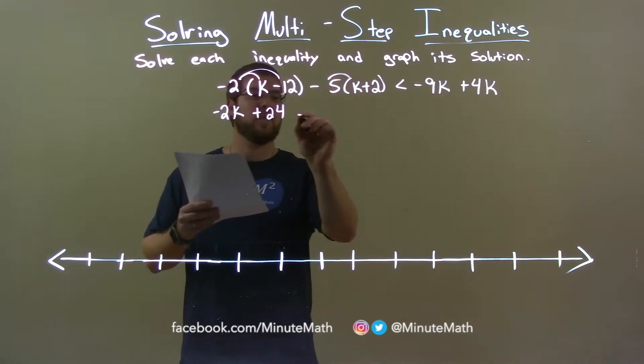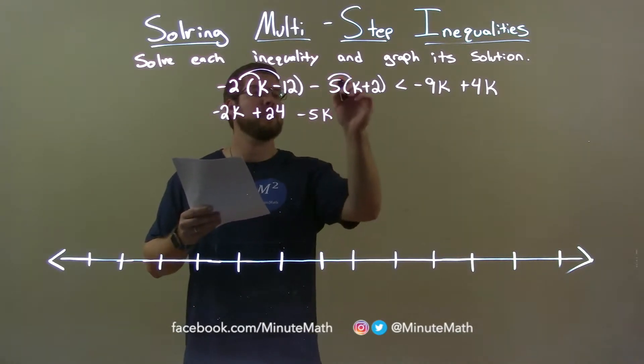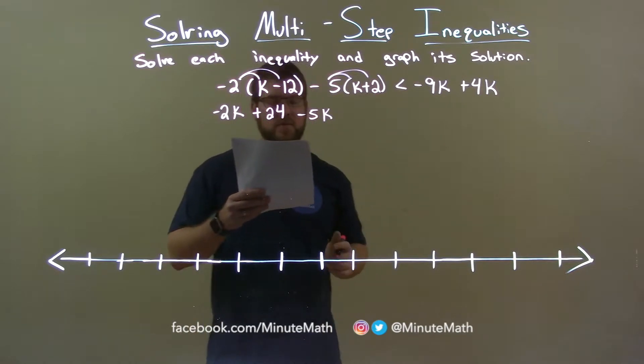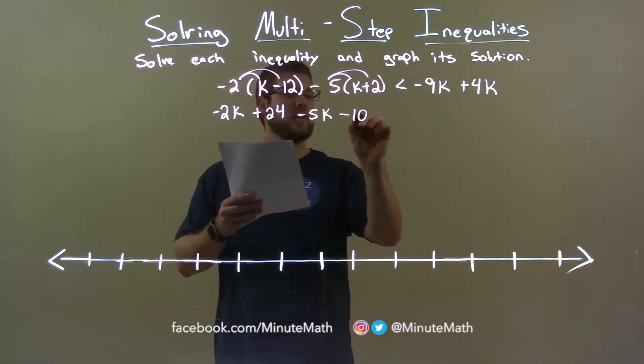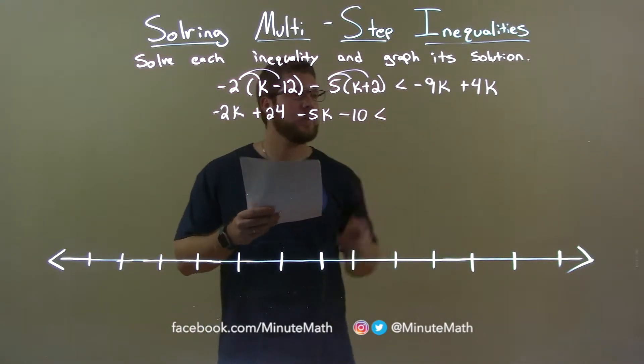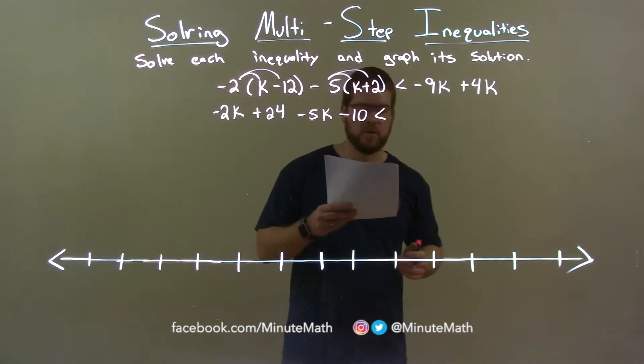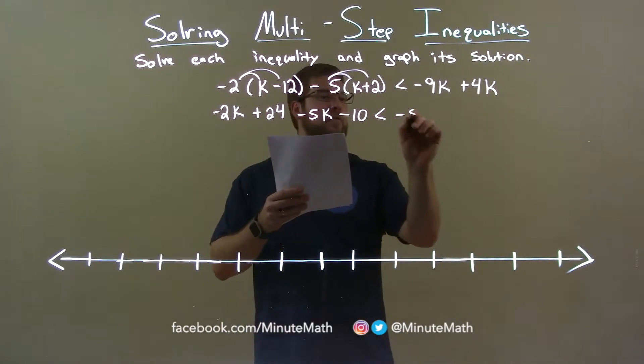Minus 5 times k is minus 5k. Then make sure you distribute the minus again. Minus 5 times 2 is negative 10 or minus 10. It's less than negative 9k plus 4k is negative 5k.